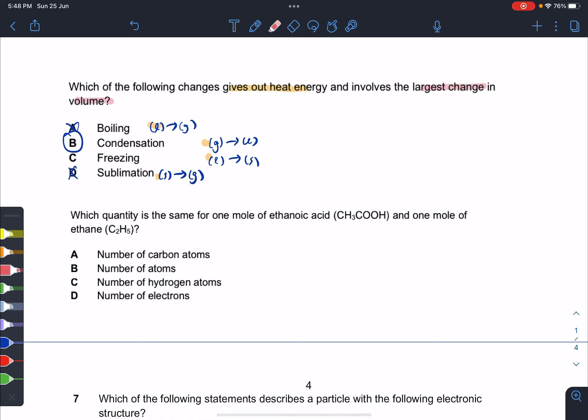Largest change in volume: solids are very close together, liquids a little bit further apart, but gases are so far apart the volume of gas can be very big.